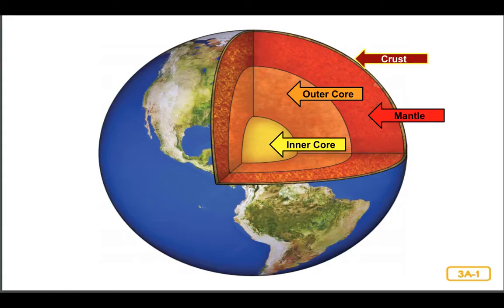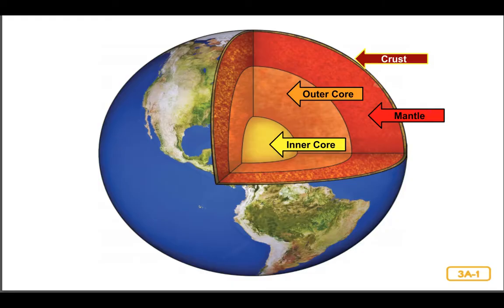The reason that the inner core is solid has to do with the incredible pressure of the Earth's entire weight pressing inward. The more pressure you put on something, the more heat you need to cause that thing to boil or melt. This is why the metal at the very center of the Earth, the inner core, is solid instead of liquid. Despite the intense heat, there is simply too much pressure caused by the weight of the rest of the Earth, so the center of the Earth cannot melt, and it remains solid.